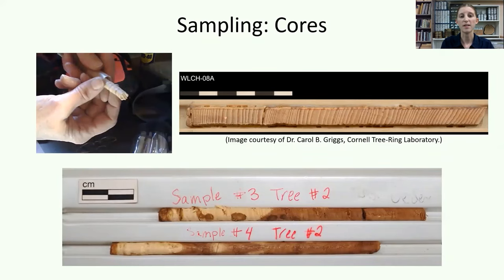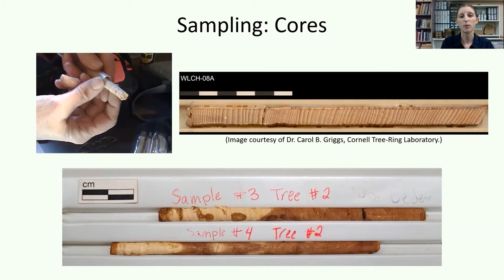Core samples provide a single radius for measurement. They are minimally destructive to the elements sampled and easier to transport and store than cross-sections. Taking multiple samples from the same and different logs or beams, like these two cedar cores from the same tree, and comparing and cross-dating the samples ensures consistency of the ring width pattern within and between sampled elements. Combining cross-dated samples into a chronology reveals a common signal and allows for more reliable dating.